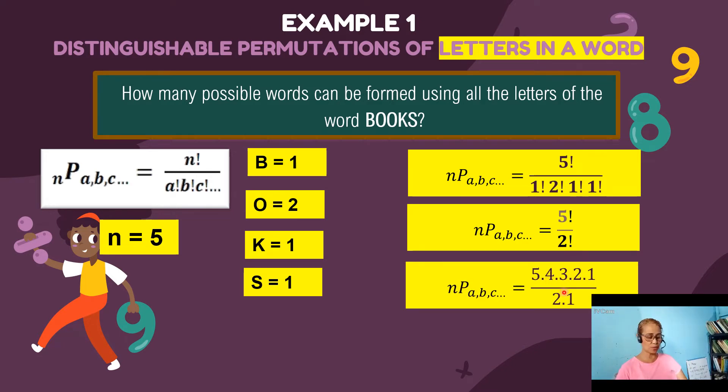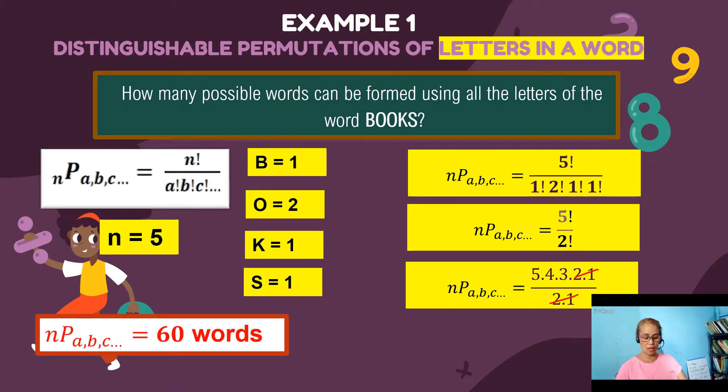Five, four, three, two, one. You multiply them all together. Then in our denominator is two, one. Then we can now cancel the common factors. So we only are left with five times four times three. And five times four is twenty times three is sixty. So there are sixty new words that you can come up with this word BOOKS.